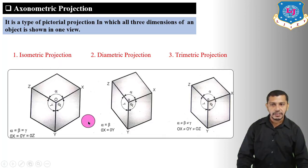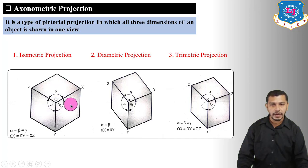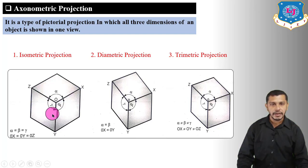These are the isometric planes, diametric planes, and trimetric planes. Isometric planes are the planes which are equally inclined to each other, and the angle of inclination between each plane is 120 degrees. In isometric planes, the horizontal plane, vertical plane, and profile plane are all inclined at the same angle of 120 degrees.